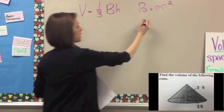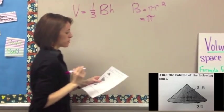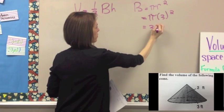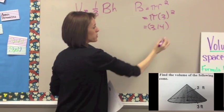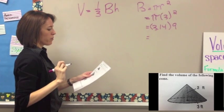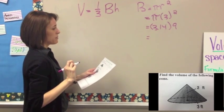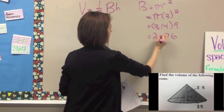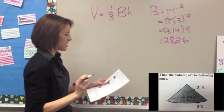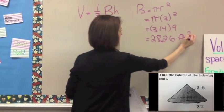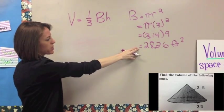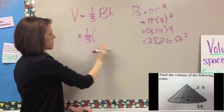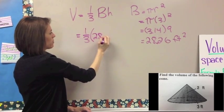We're going to plug the values in: π times the radius squared, which is 3 squared. That gives us π (3.14) times 9. So 3.14 times 9 gives us 28.26 as the area of the base. Now we take that and plug it into the original formula: (1/3) times the area of the base, which is 28.26.